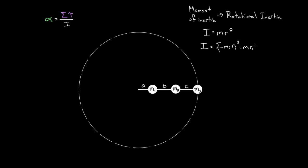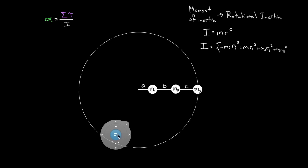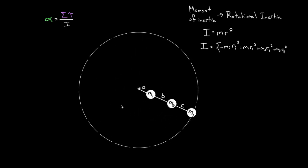So for multiple point masses, this would be m₁ times r₁ squared — mass one times its distance from the axis squared — plus m₂ times r₂ squared, plus m₃ times r₃ squared, and if you had more masses you'd keep adding them up. If you have a whole bunch of point masses where all of each particular mass rotates at the same radius, you can use this formula and add up the contributions.